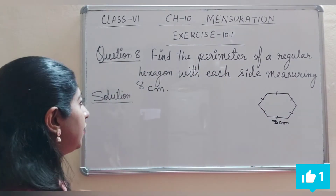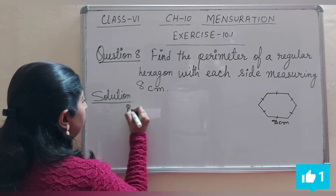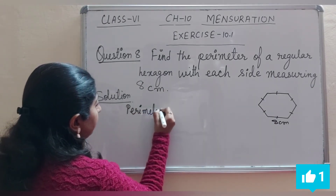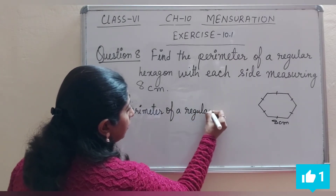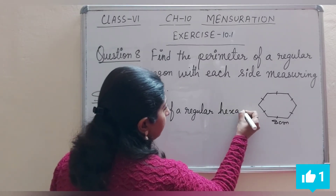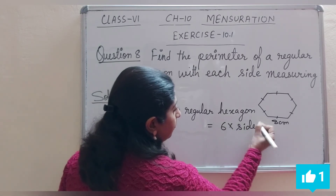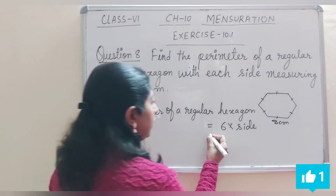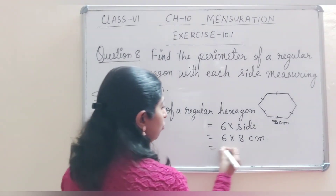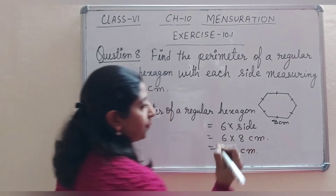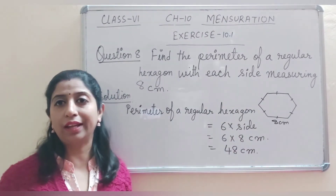Now we have to find out the perimeter of this regular hexagon. Perimeter of a regular hexagon is equal to 6 multiplied by side. So we will write here 6 multiplied by 8 cm. On multiplication, we get 48 cm. So 48 cm is the perimeter of this regular hexagon.